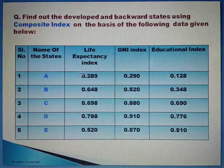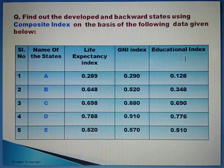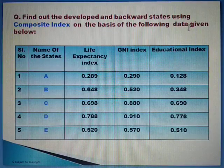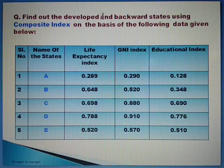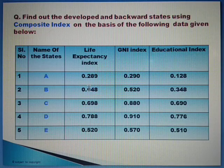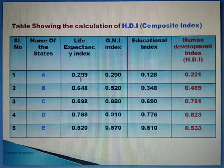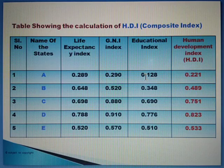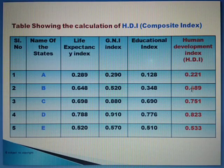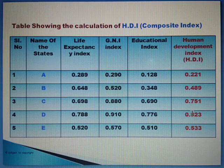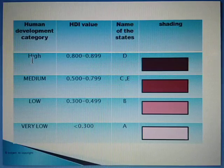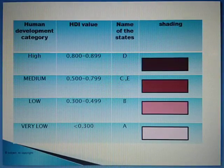In the practice question, life expectancy index, gross national income index, and educational index are given. The question asks to find out the developed and backward states using the composite index. Since the individual index values are already given, one can easily find the HDI by multiplying these three values and taking the cube root. This is very simple. On the basis of the calculated HDI, you have to categorize the zones. I have created 4 zones in total.